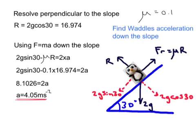4.05 metres per second squared. You go Waddles. That's quite an acceleration down the slide. Hope someone's going to catch you at the end.